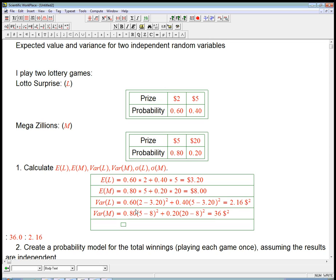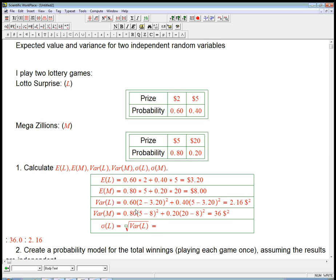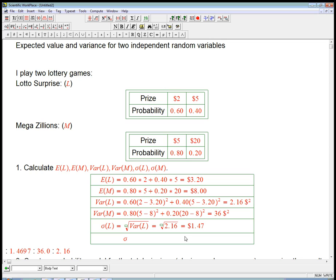Now the standard deviations bring those back into nice units. So the standard deviation of L is just the square root of the variance of L. And so that's the square root of 2.16, and so that's 1.47. And that's back in dollars. And then the standard deviation sigma is the square root of the variance of M. And that's the square root of 36 dollars squared, which is interestingly enough a nice number. I didn't mean that to happen, it just worked out that way.